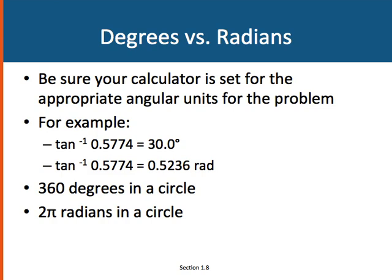If I were to take the arc tangent of 0.5774, and my calculator was set for degrees, I'd get 30 degrees. But if I had my calculator set for radians and took the arc tangent of 0.5774, I'd get 0.5236 radians. Now, 0.5236 radians and 30 degrees are the same angle. They're just different units.